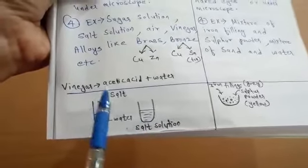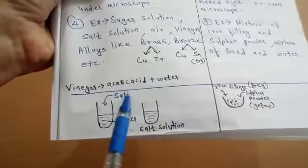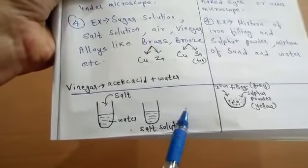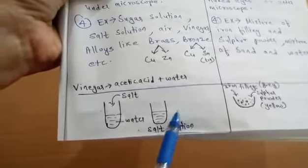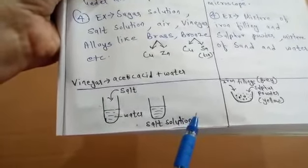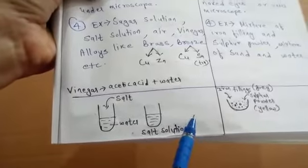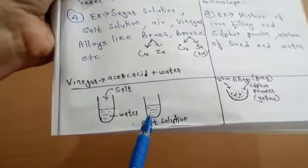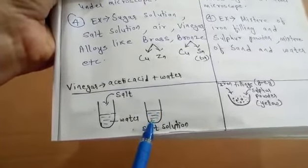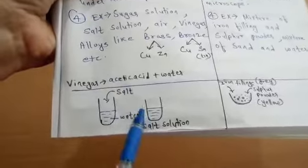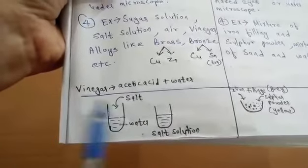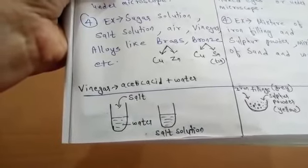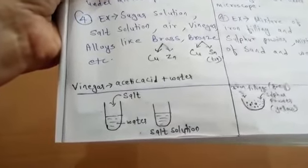Compare this with sand and water — when mixed, the sand settles down and water remains on top, creating a visible boundary of separation. But in salt solution, there is no visible boundary of separation. So in a homogeneous mixture, there is no visible boundary of separation.